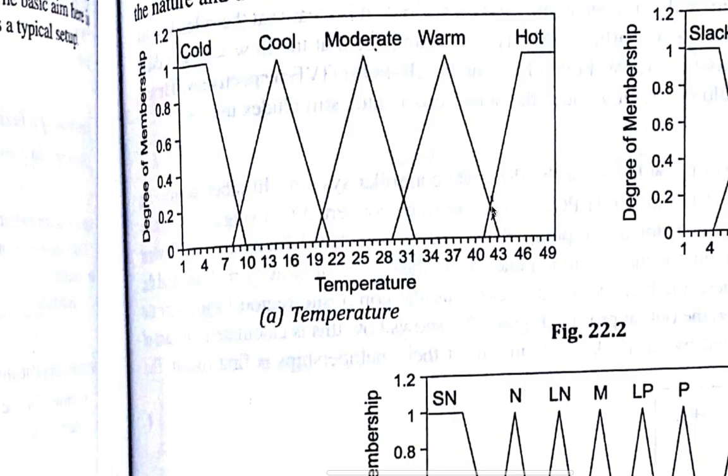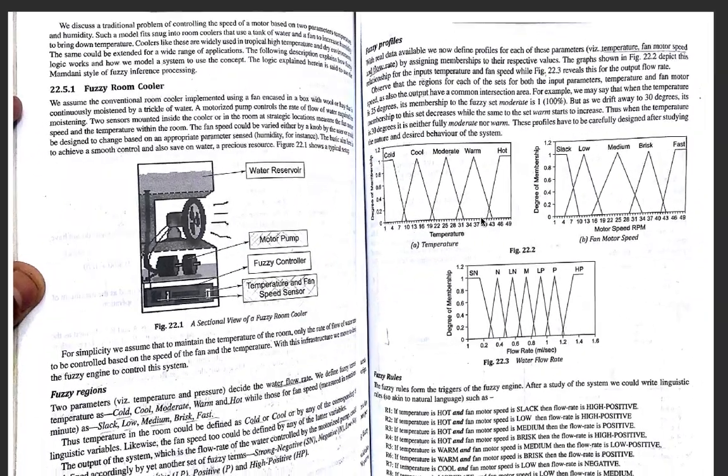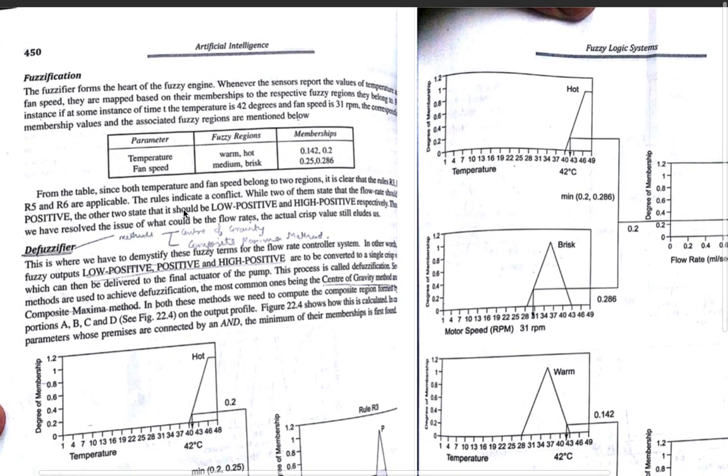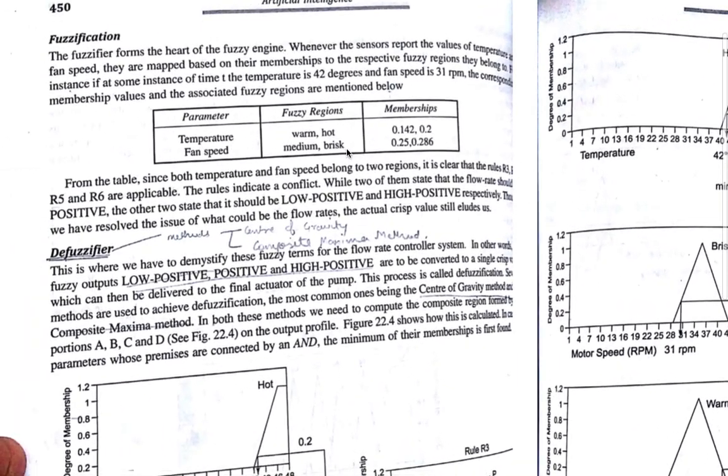At 42, hot value is 0.2. So as you can see, on 42 degrees, warm value is 0.1442 and your hot value is 0.2. Accordingly, we have written for x value 31 RPM, what is the fan speed? And accordingly, we see which rule apply to them.